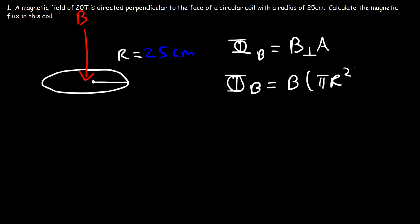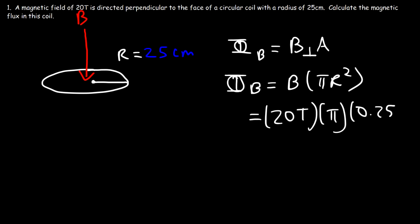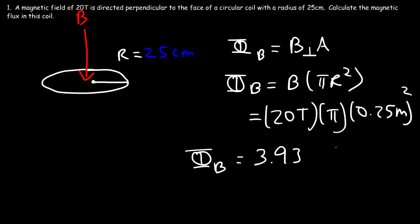The area is π r². The magnetic field is 20 tesla and the radius is 25 centimeters, which is 0.25 meters. So the magnetic flux is 3.93 tesla times square meters, which you can simply represent as webers.